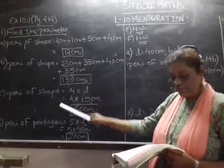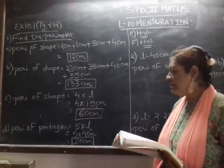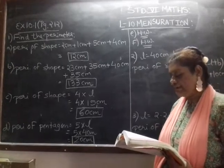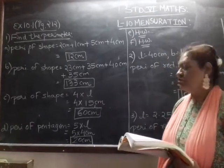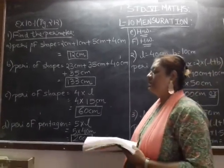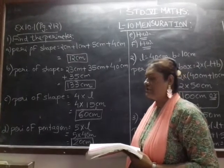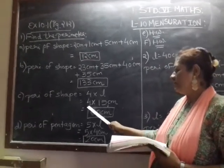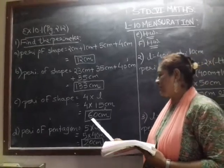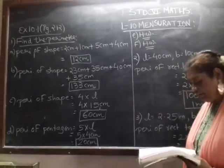Perimeter of shape for C, you can see that all the 4 sides are same. So what you will do? You know the formula for finding out for the square, 4 into L. So 4 into 15 centimeter, your answer is 60 centimeter.